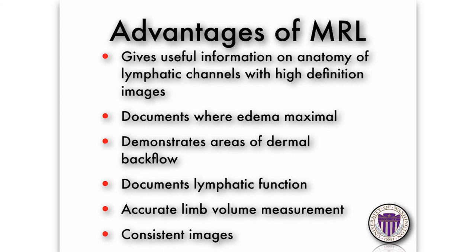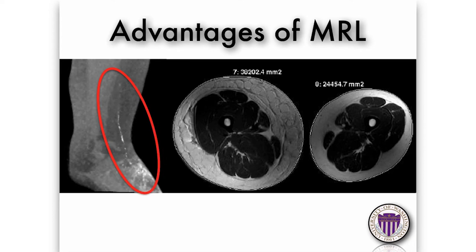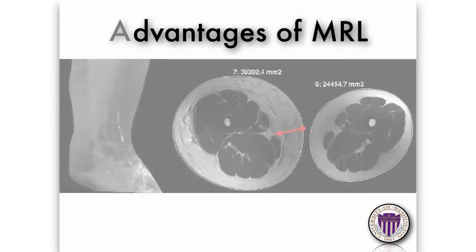The advantages of MR lymphangiography are that it gives very useful information on the anatomy of lymphatic channels with high-definition images, so it's good for planning surgery. It documents where the edema is maximal and demonstrates areas of dermal backflow — where you get leakage of lymph into the dermis, indicating a blockage upstream in the lymphatic system. Knowing where areas of dermal backflow are in the limb may indicate where you want to put a lymph node transfer. The MRL also documents lymphatic function, gives accurate limb volume measurements, and the images are consistent. For example, in a patient with Milroy's disease you can see a single lymphatic channel at the ankle, and also the amount of fat in the tissue compared with the normal limb.